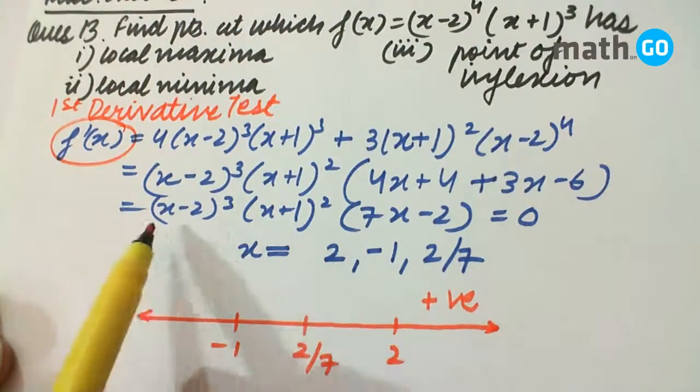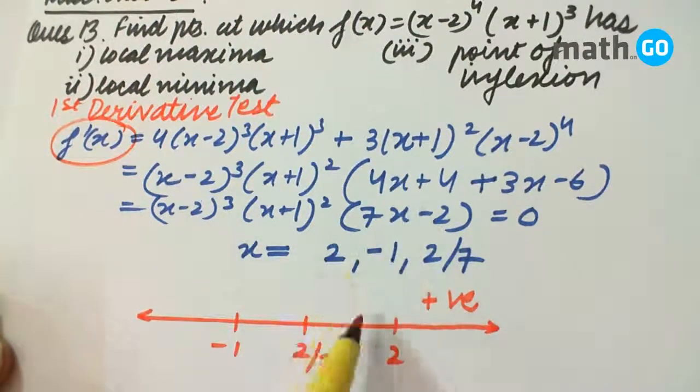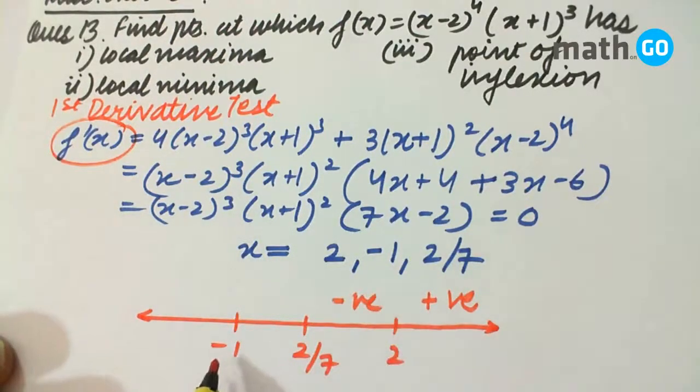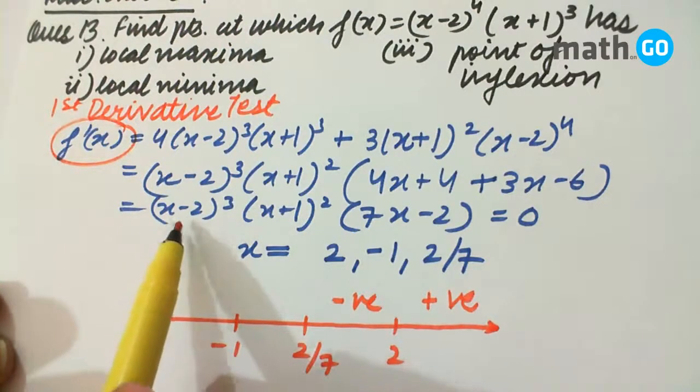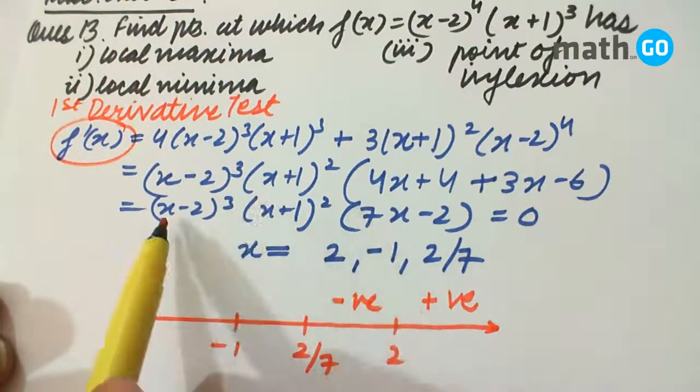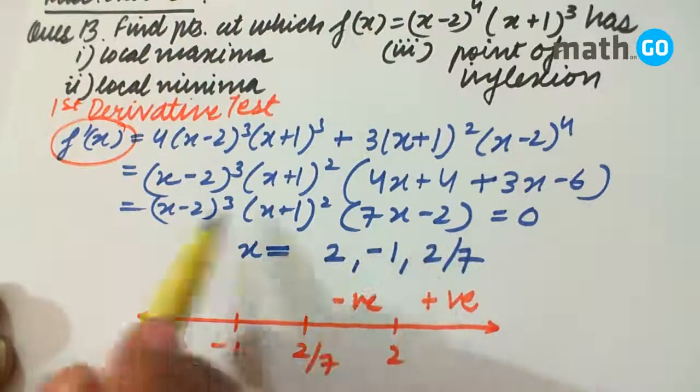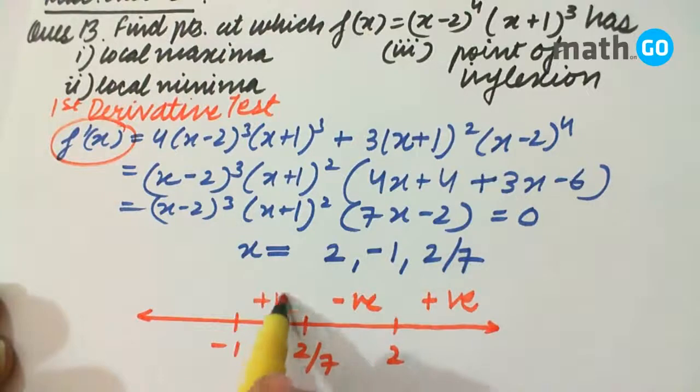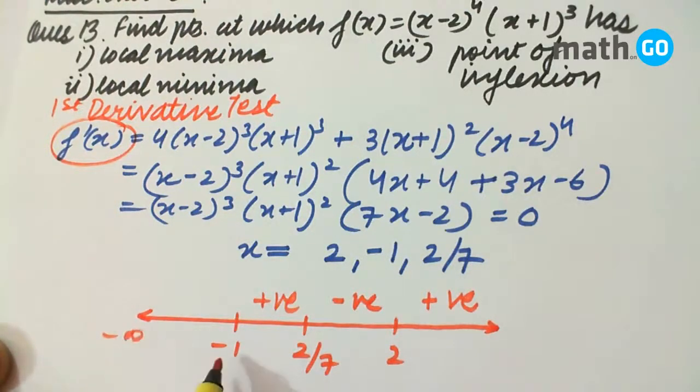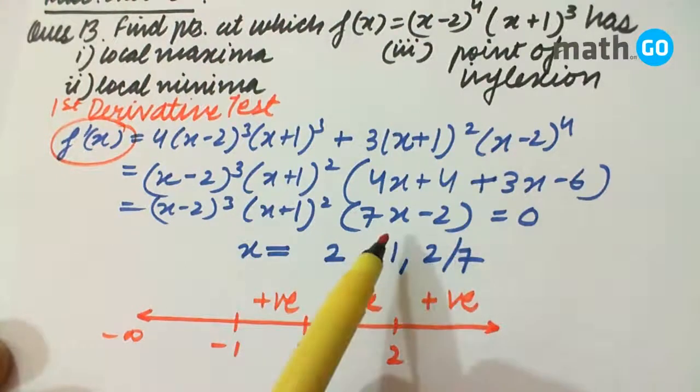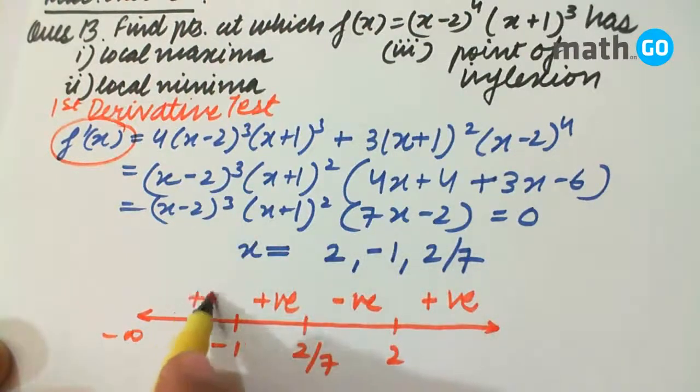Between -1 and 2/7, suppose we take 0, at 0 the value is negative times negative, that is positive. And between -1 to minus infinity, suppose we consider -2, then the value is positive again.